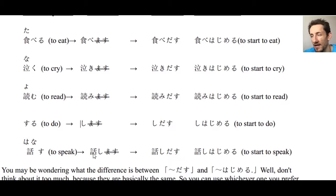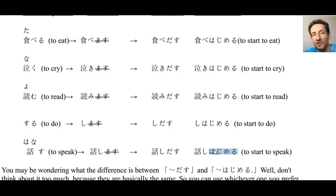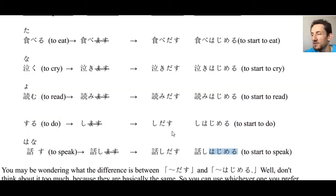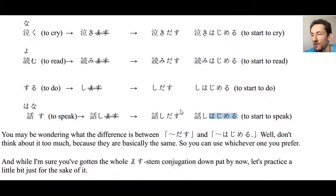And the last one: hanasu. We get hanashimasu, drop masu, and get hanashi dasu or hanashi hajimeru. Hajimeru is a little difficult to say and requires some practice. If you find yourself tripping over your tongue at first, that's normal. Just practice: shidasu, shi hajimeru, yomi dasu, yomi hajimeru — try this with different verbs.